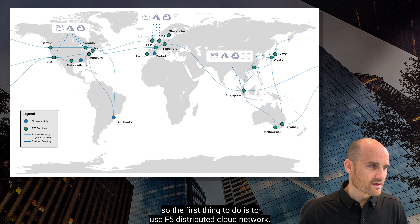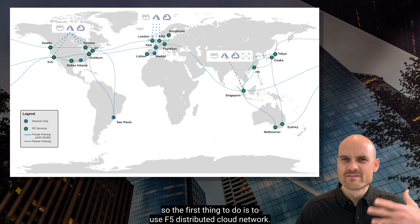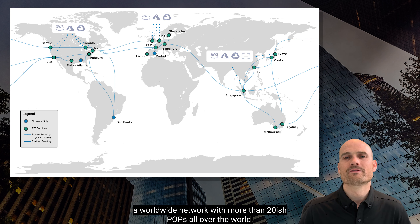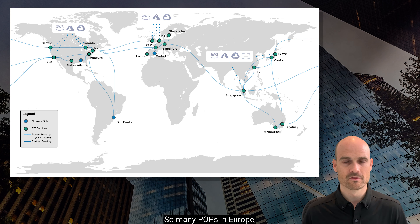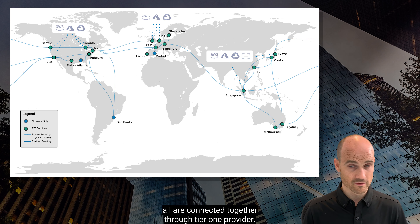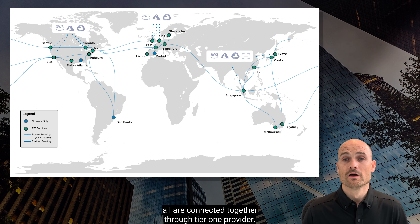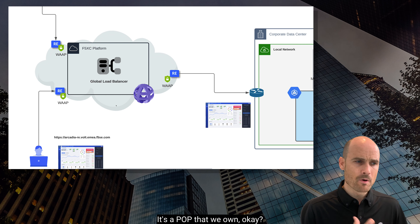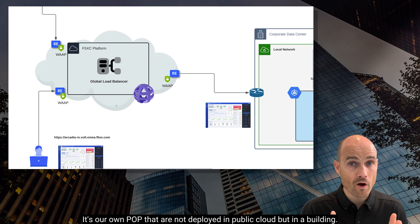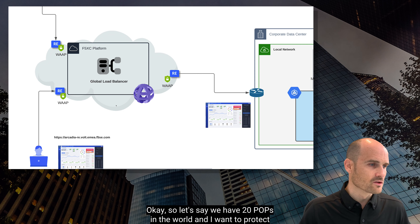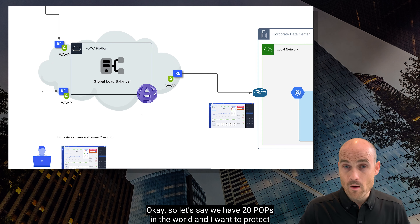The first thing to do is to use the F5 Distributed Cloud network. The F5 Distributed Cloud network is a WAN network with more than 20 POPs all over the world — many POPs in Europe, many in North America, POPs in Asia and Australia as well. As you can see on the map, all are interconnected through Tier 1 providers. Those POPs can deliver the WAF solution. In F5, we name those POPs RE — Regional Edge. These are POPs that we own, not deployed in public cloud; they are in our own buildings with our own racks.